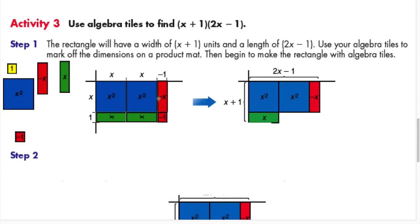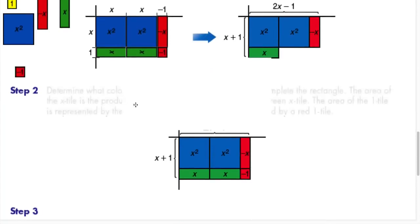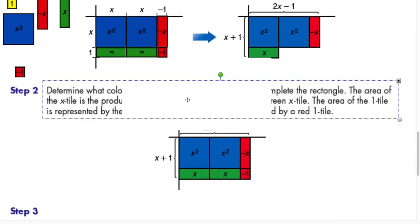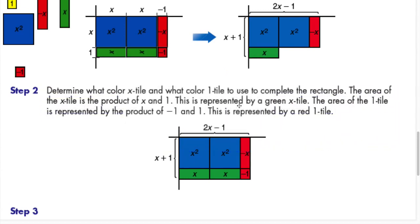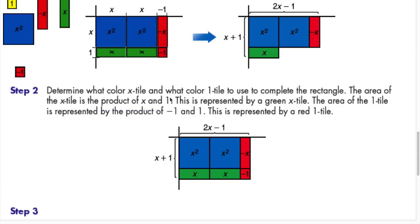We've filled in the rectangle exactly. Step 2: determine what color x-tile and unit tile to use to complete the rectangle — we've already done that. The area of the x-tile is the product of x and 1, represented by a green x-tile. The area of the unit tile is the product of negative 1 times 1, represented by a red tile.